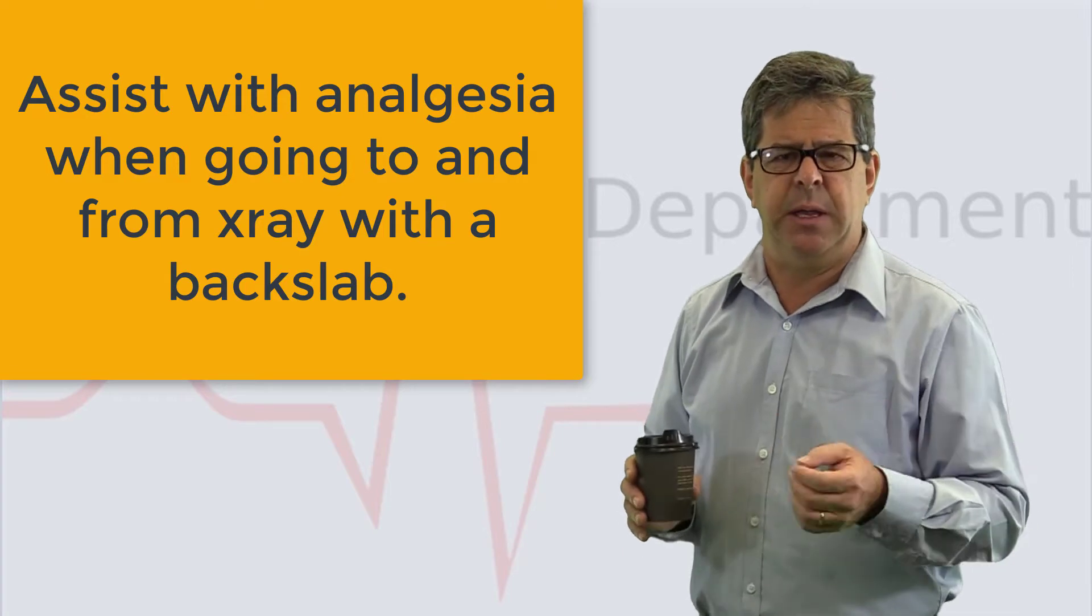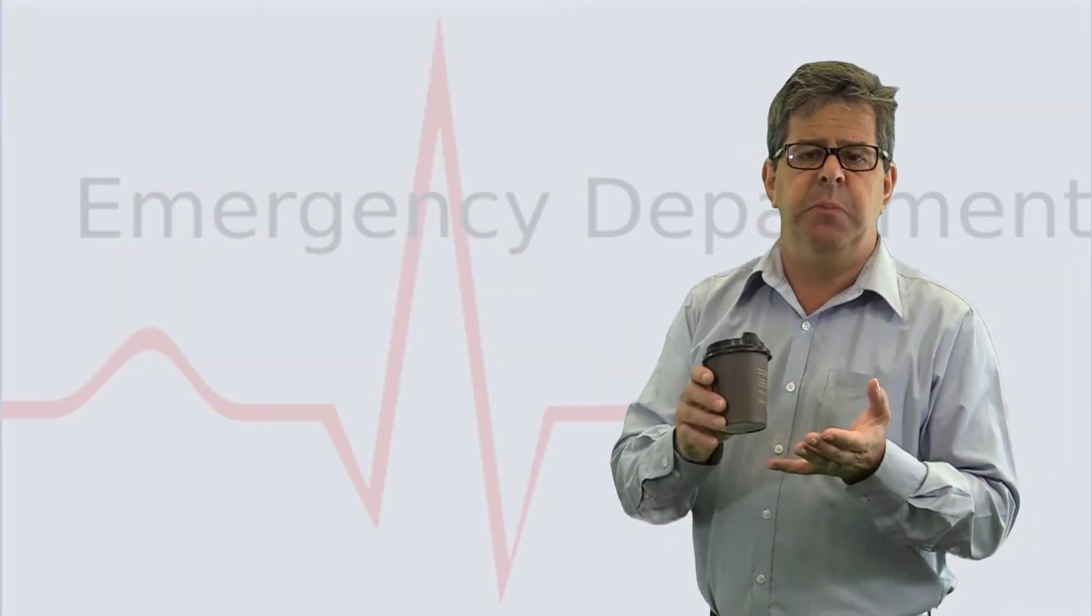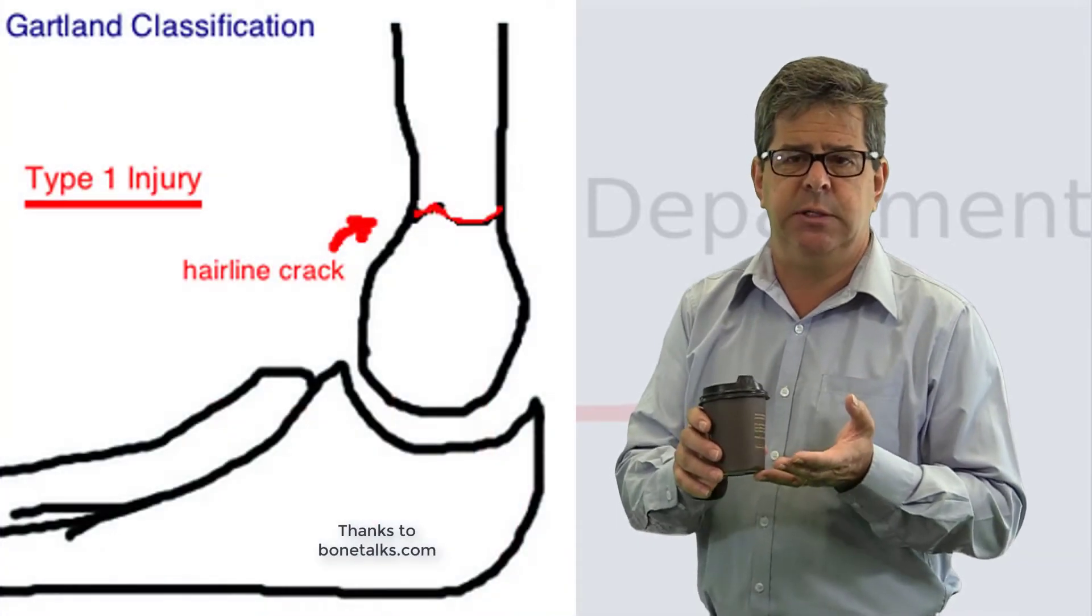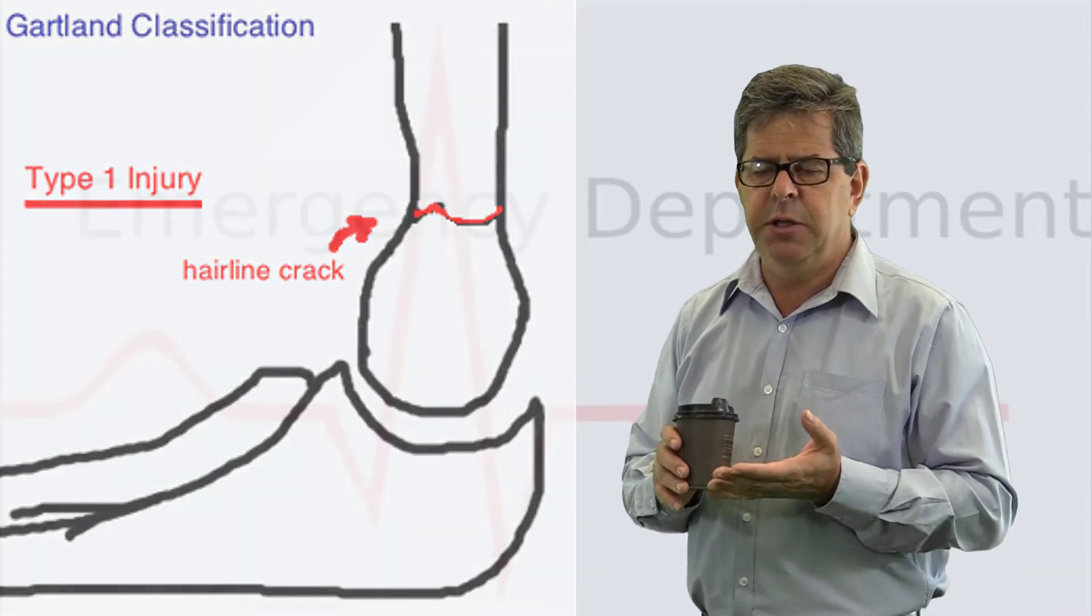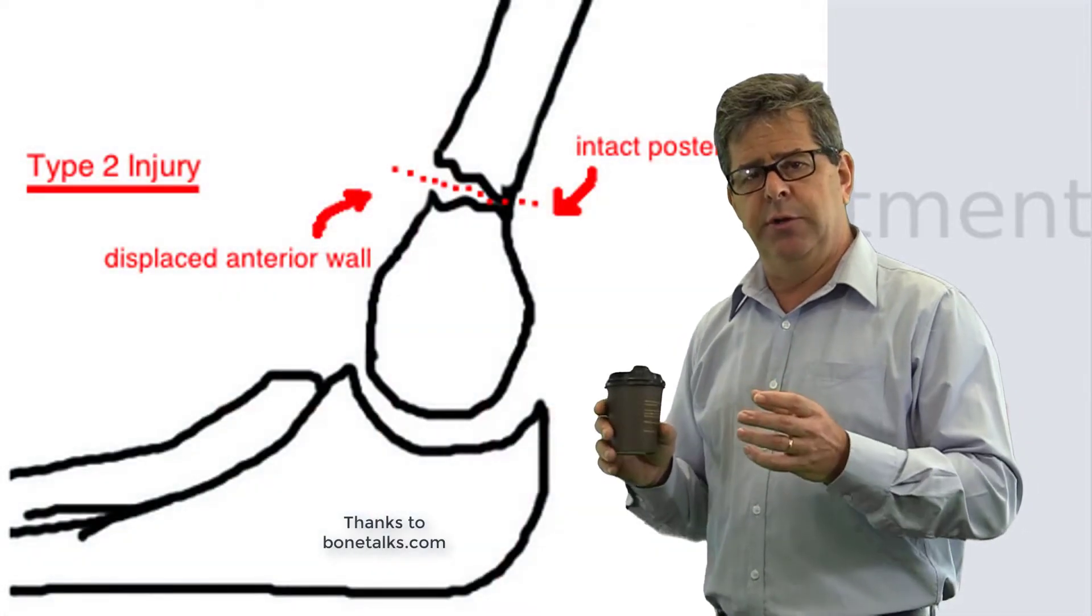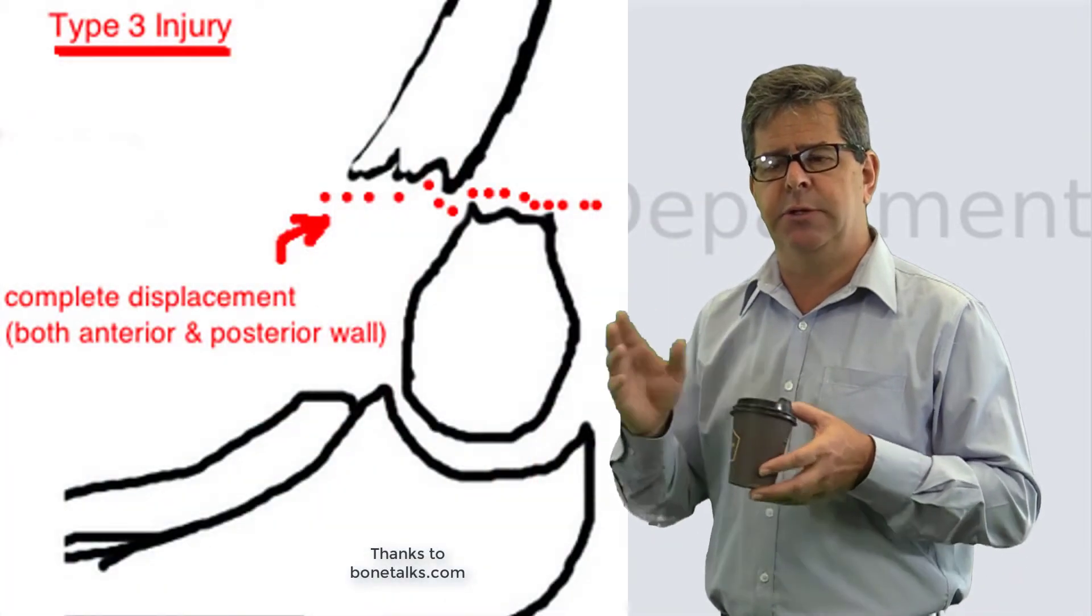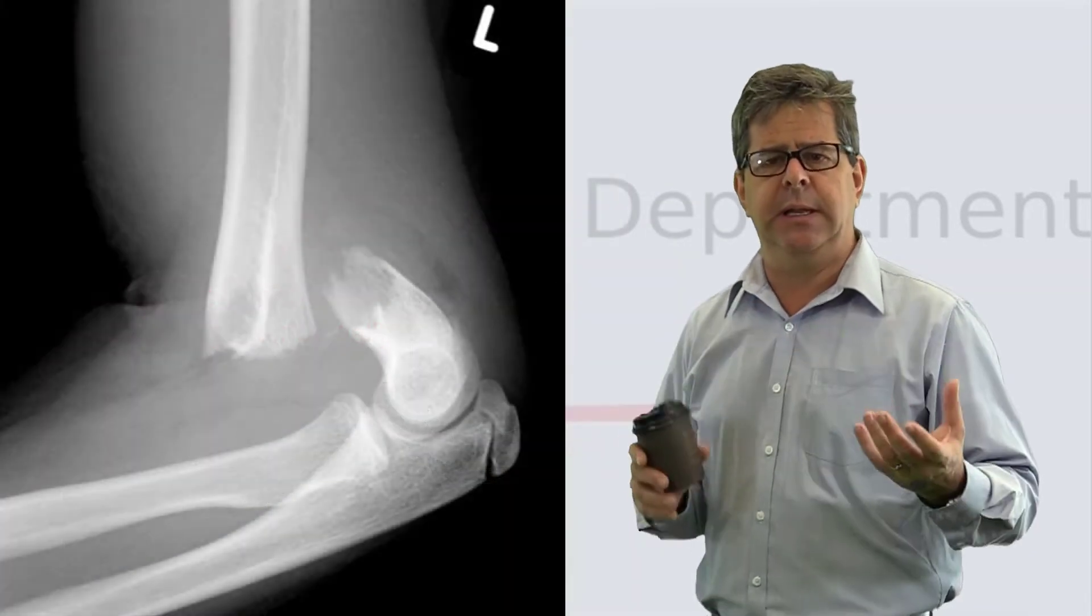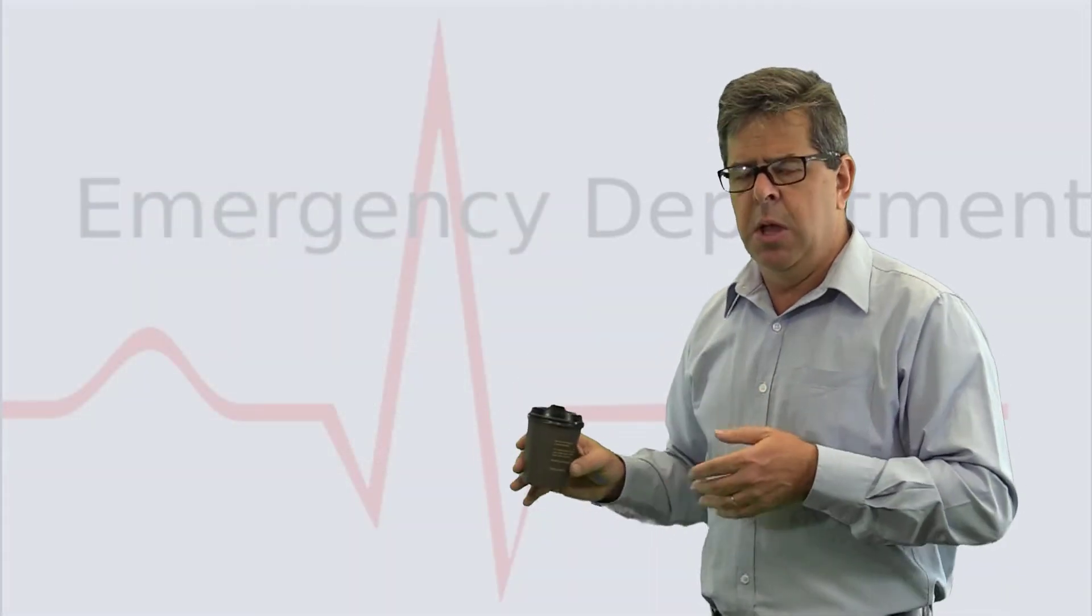On the x-ray you'll see whether it's minimally displaced or not displaced supracondylar fracture, whether it's mildly displaced but still in contact, or whether you start to lose contact both anteriorly and posteriorly, or completely out. These are graded type 1, 2, 3, 4.